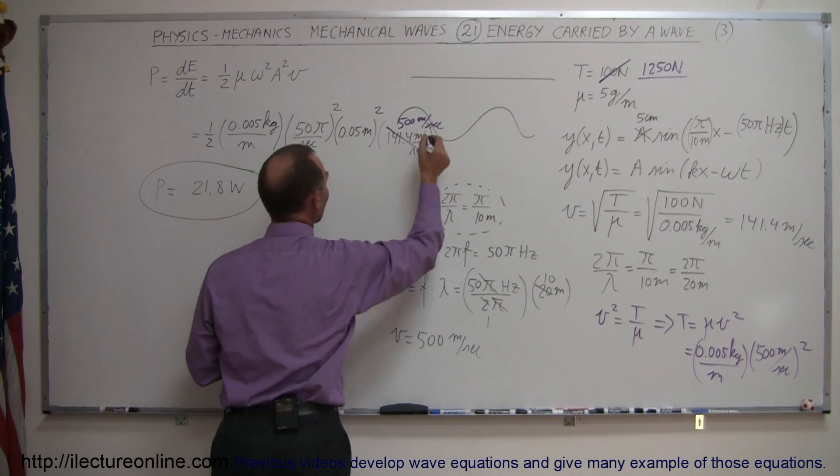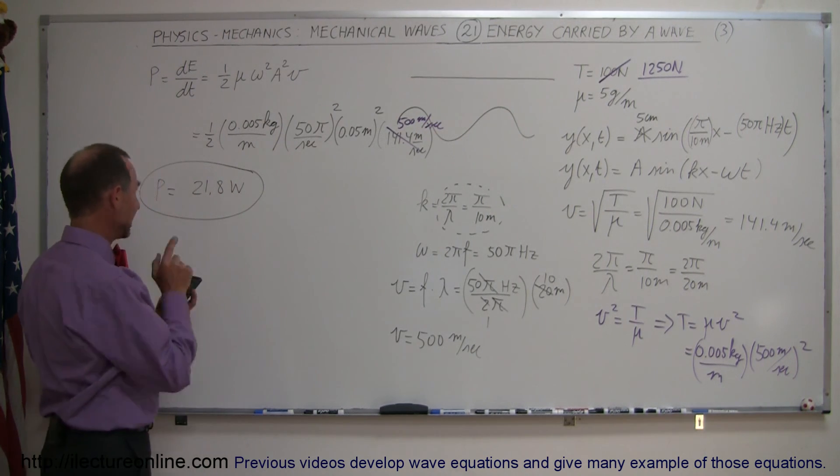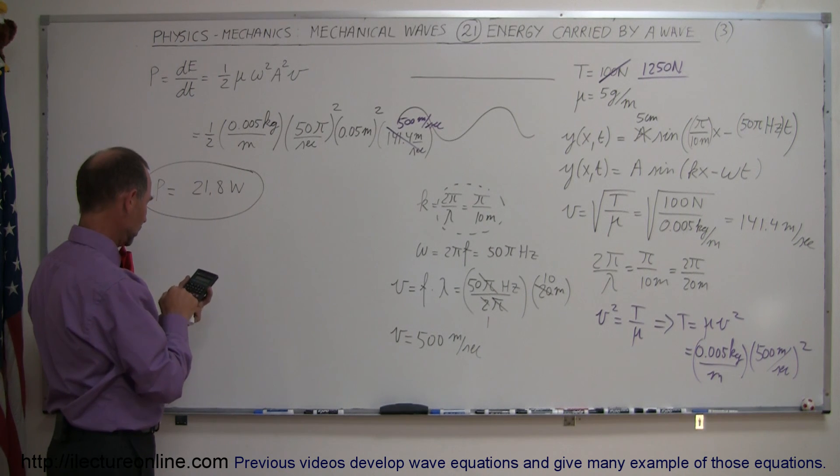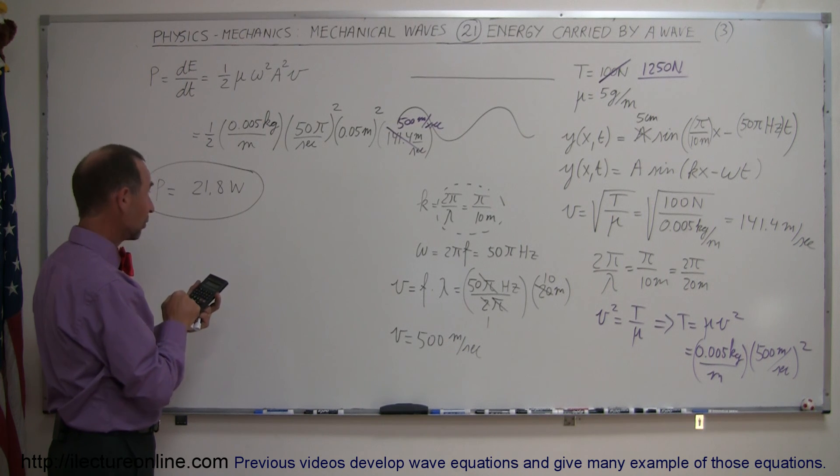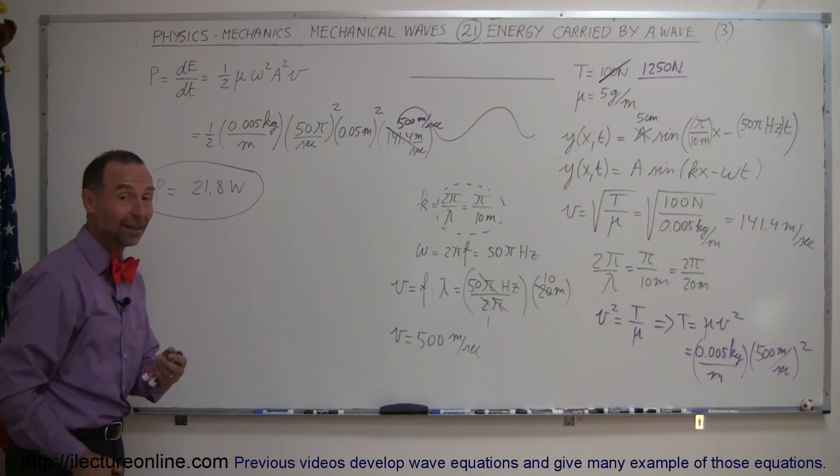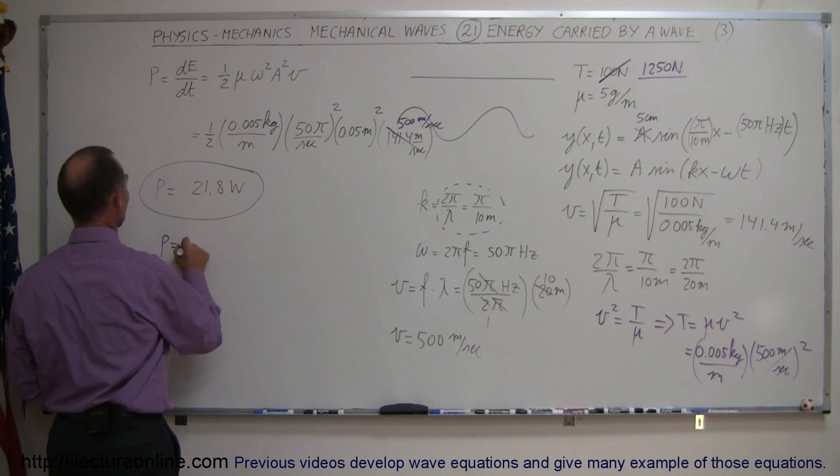If I then replace this by 500 meters per second, then I get the value where everything matches. So, just so, we take this, 21.8, 21.8, we divide it by 141.4, and multiply times 500, and then we've gotten a power transport of 77 watts.